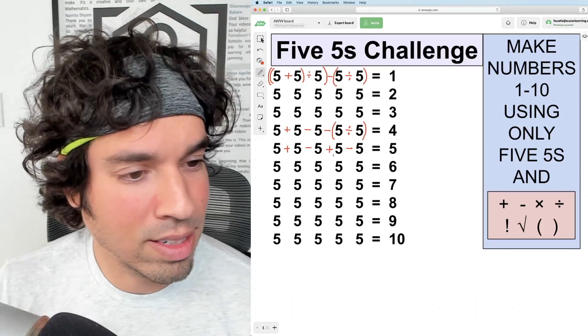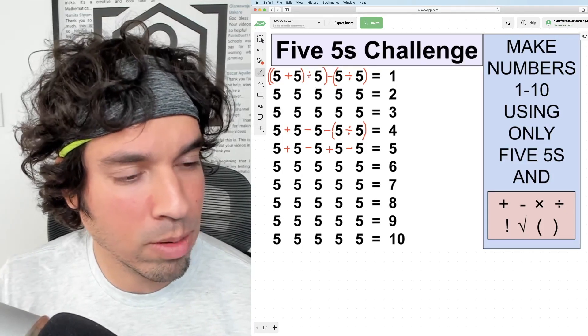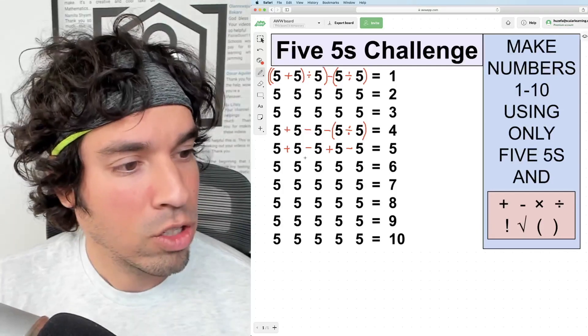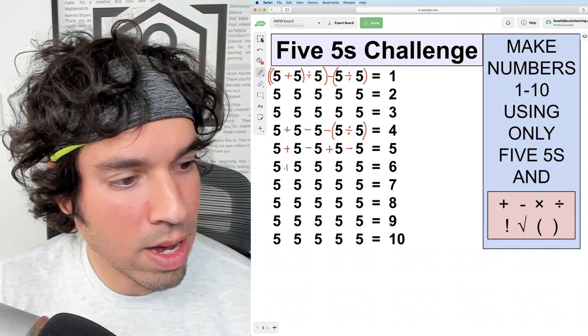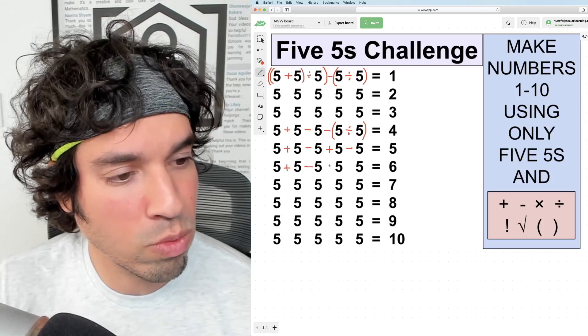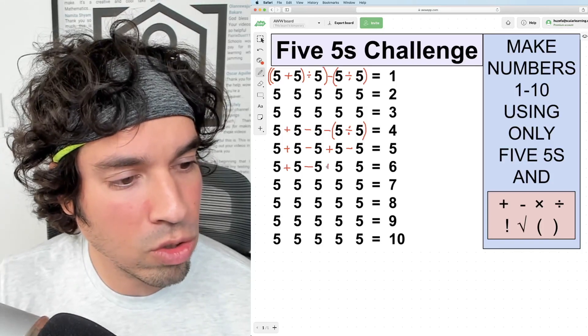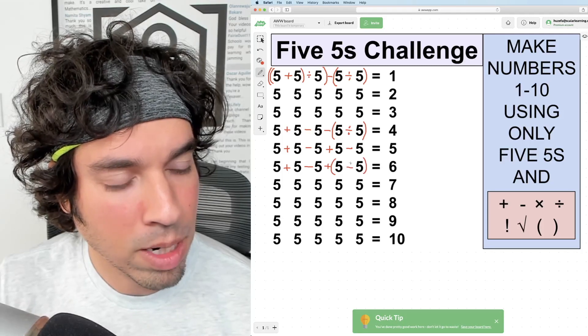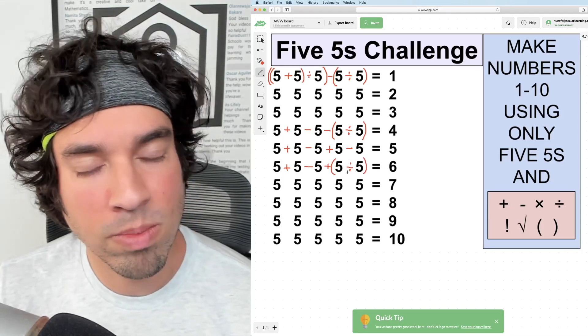Next, let's move on to six. Six is very similar to four. Just like I'm subtracting one here, I'm just going to do the same thing, but add one. So again, we're going to go five plus five is ten, minus five is five. So at this point, we're at five. Now, all I need to do is add a one. And I already know I can get a one by dividing those two fives.